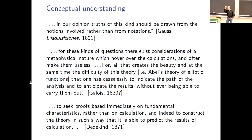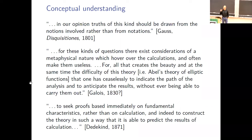There's an unpublished two-page manuscript by Galois in his collected works, where he's talking about his work in Galois theory and how the calculations get out of hand. He says: 'For these kinds of questions there exist considerations of a metaphysical nature which hover over the calculations and often make them useless.' He goes on to discuss Abel's theory of elliptic functions, saying that 'all that creates the beauty and at the same time the difficulty of this theory is that one has ceaselessly to indicate the path of the analysis and to anticipate the results without ever being able to carry them out.' I think he's referring to how in elliptic functions, the theory tells you how to reason about them without needing to actually calculate them.